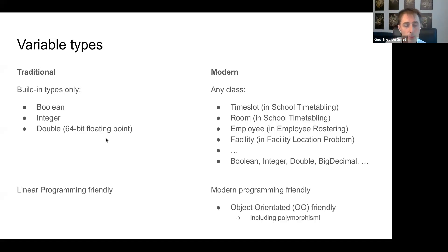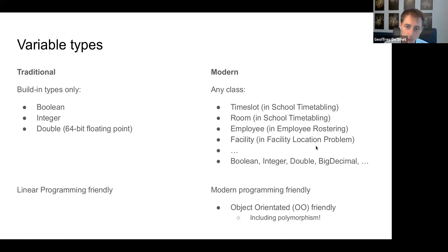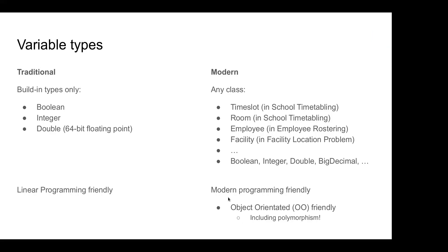I would argue the traditional approach is what I call linear programming friendly — the implementation is typically linear programming. The modern approach, at least in my implementation, uses local search — there are many different algorithms you can use or combine — but in general it's local search or meta-heuristics, and that's what makes it modern programming friendly, as I'll show later.